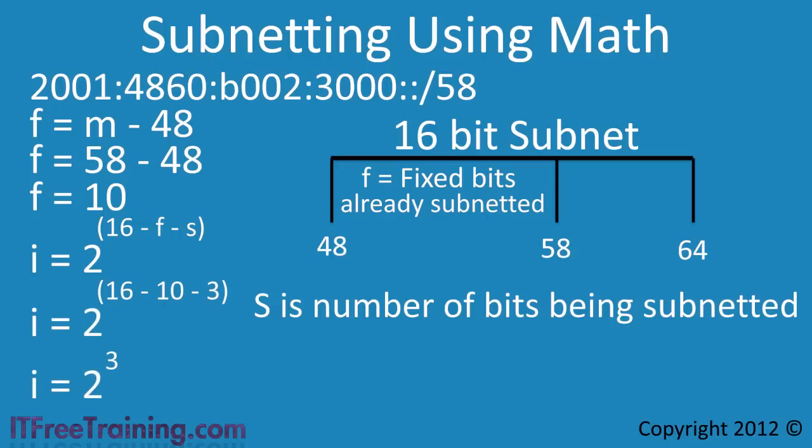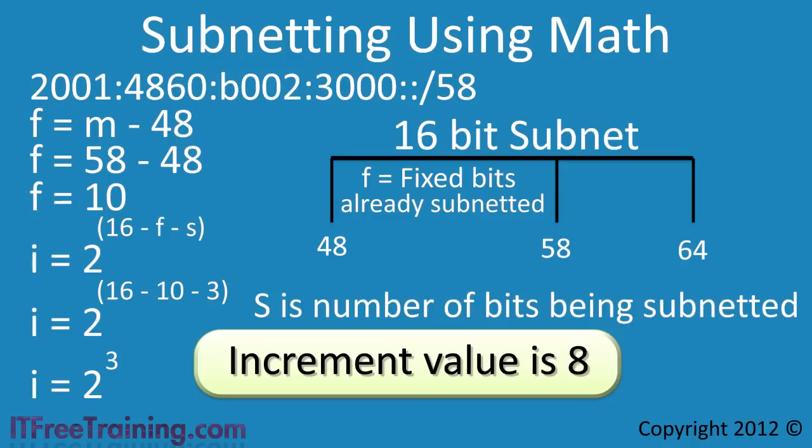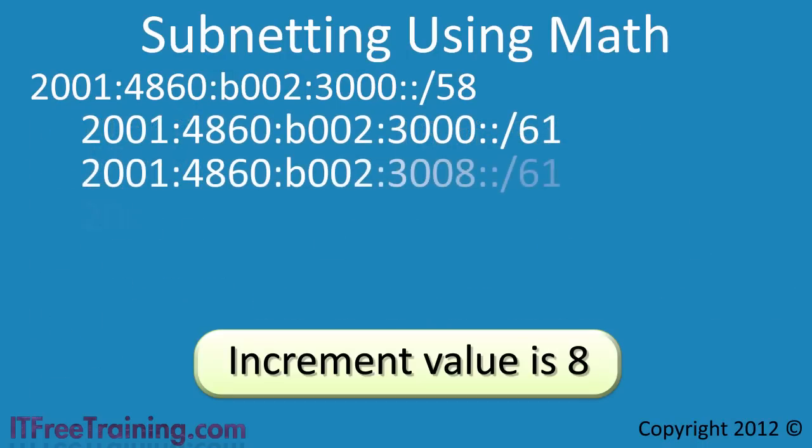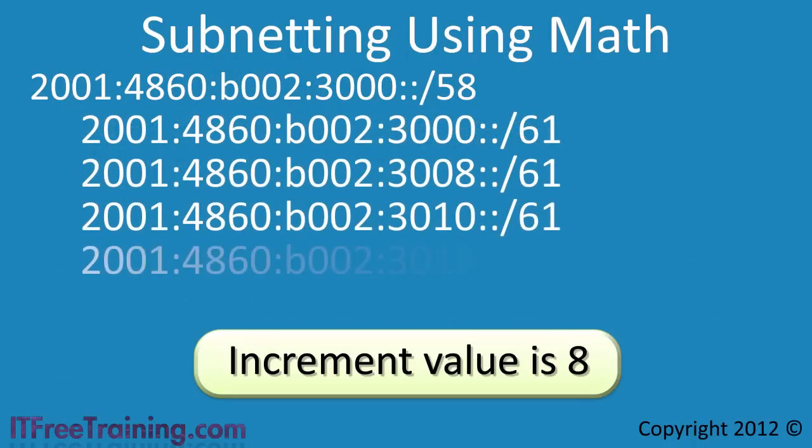When I plug in all the values, this will give me 2 to the power of 3 which equals 8, thus the increment value of 8 for the new subnets. If I expand the first subnet, this gives me the following address ranges.